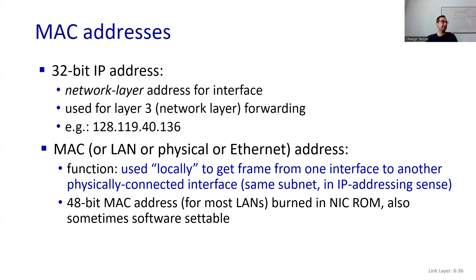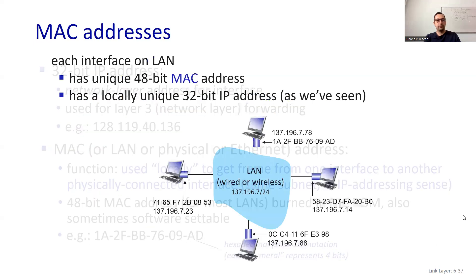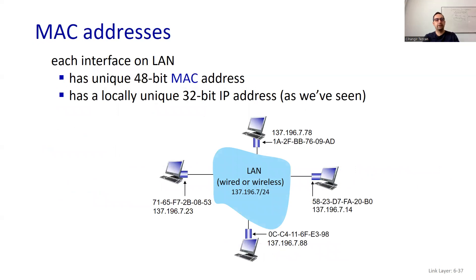Here's an example: 48 bits are shown as six bytes in hexadecimal notation. Every character represents four bits, so each pair of hex characters is one byte (eight bits). Each interface on a local area network has a unique 48-bit MAC address and a locally unique 32-bit IP address, as we've seen before. So we have both MAC and IP addresses for devices connected in the same local area network.